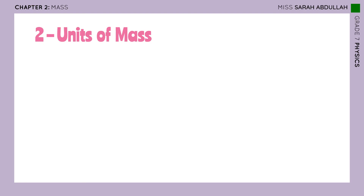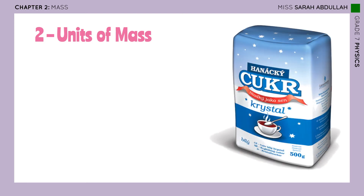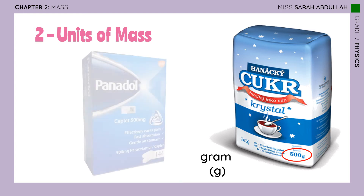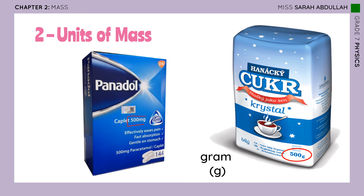Now that we know kilogram is a unit of mass, let's get to know other units. I have a sugar bag here — its mass is 500 grams. So the other unit of mass is the gram, symbol G. If you look at a medicine like panadol, the mass written on it is the mass of every pill inside. It says 500 mg, which is milligrams — another unit of mass. So we have kilogram, gram, and milligram.